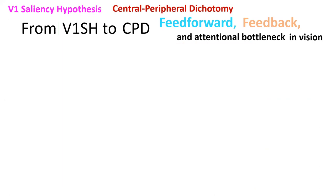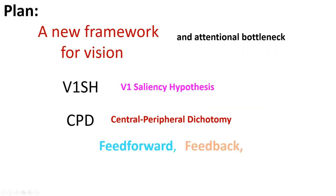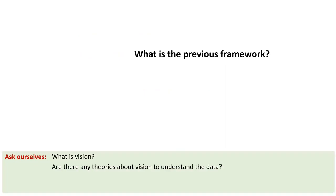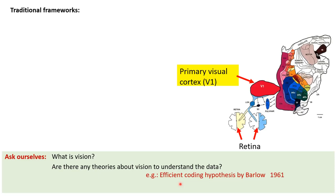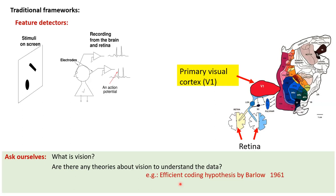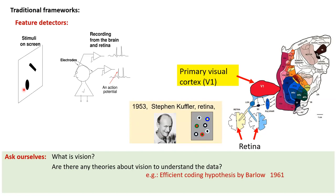The plan is to motivate this new framework — the V1 Saliency Hypothesis and Central Peripheral Dichotomy — and then ask: what is the previous framework and why should we change it? What is vision? One framework is to look for feature detectors. This started with putting electrodes in brain regions and stimulating to see what drives them — more than half a century ago, discovering that in the retina you have center-surround features: dot features, different neurons driven by different dots at different locations tiling the whole visual field.